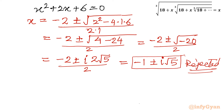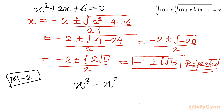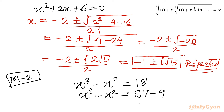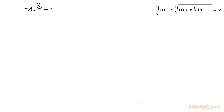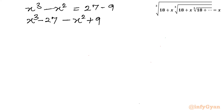Now let us consider method number 2, using algebraic manipulation and algebraic identities. We start with x cubed minus x squared equals 18. We split 18 as 27 minus 9, so we write x cubed minus x squared equals 27 minus 9. Rearranging: x cubed minus 27 minus x squared plus 9 equals 0.